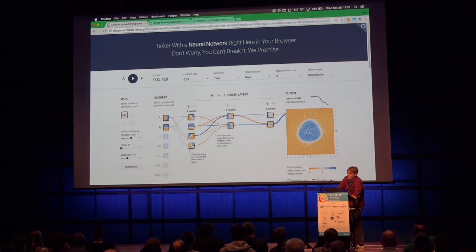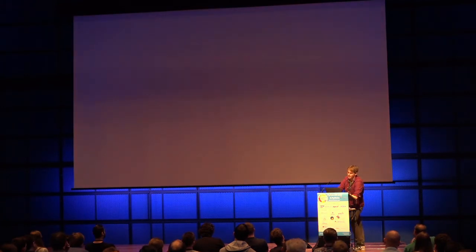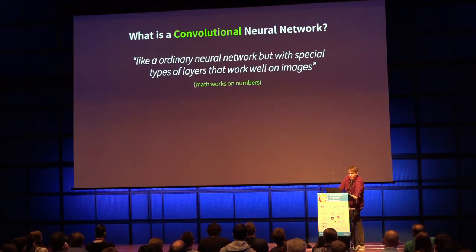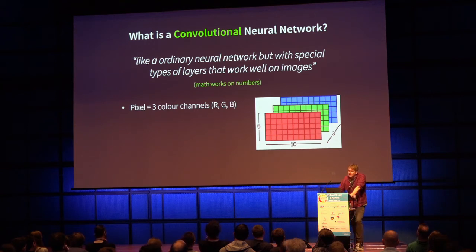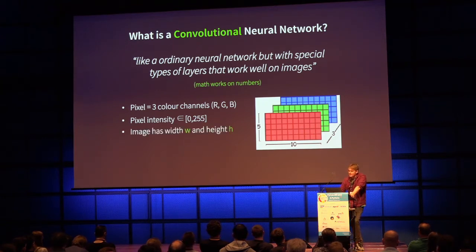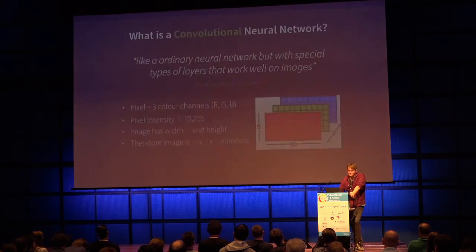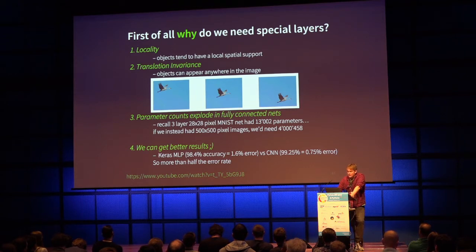What is a convolutional neural network? Think of it as an ordinary neural network — a multi-layer perceptron — but with special types of layers that work well on images. Math works on numbers, not images. If you look at an old CRT TV close up, you see red, green, and blue dots — each pixel is three numbers, each between 0 and 255. An image with width W and height H is W times H times 3 numbers.